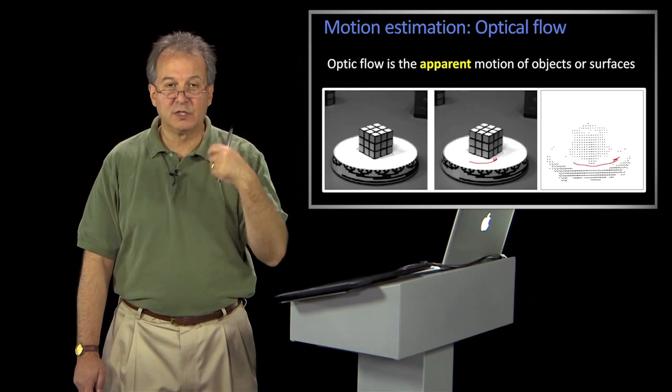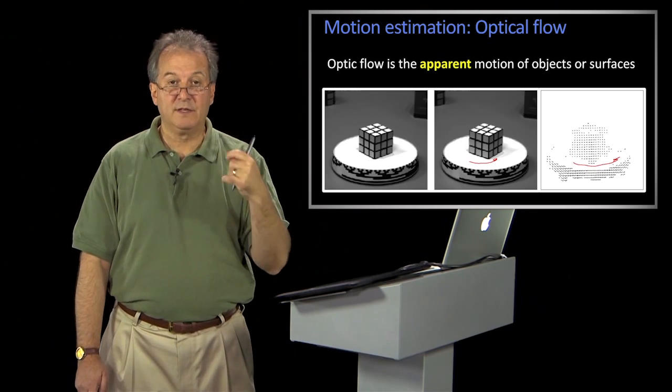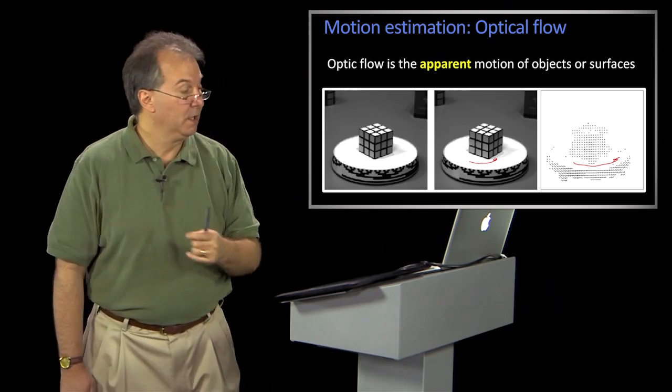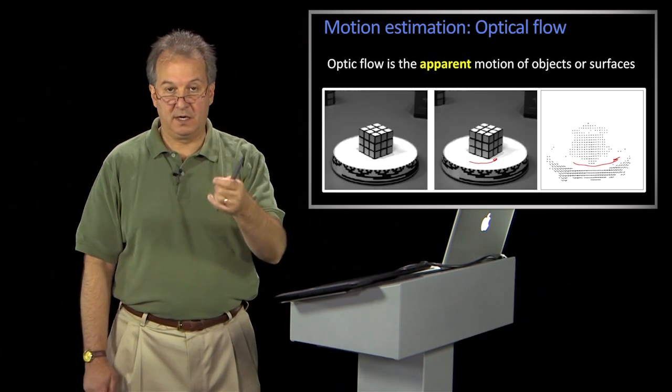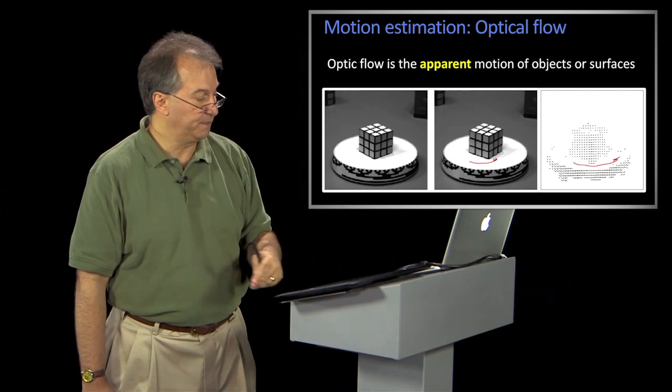There's no apparent motion, because there's no contrast, there's no texture. There's no indication that the pattern is moving. So the optic flow is recovering the apparent motion of objects or points or surfaces.